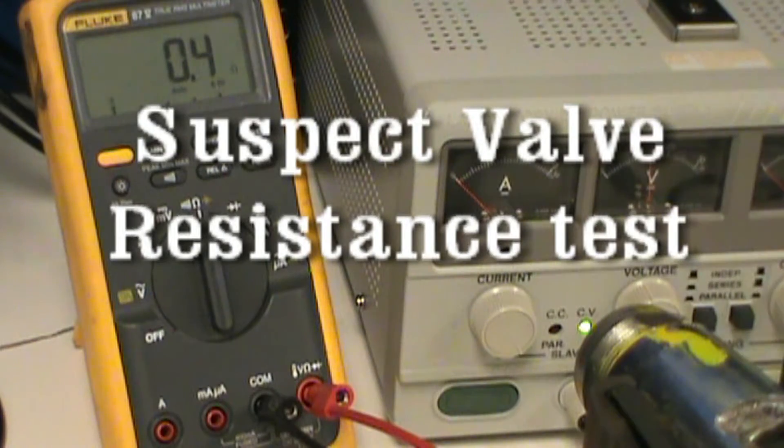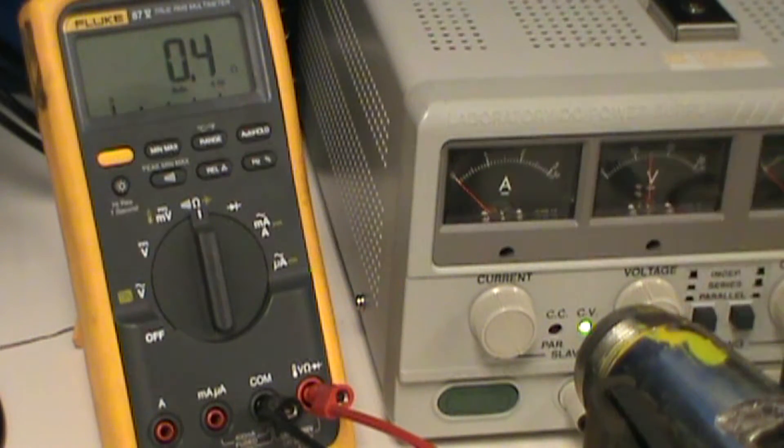Alright, now I've transferred my leads over to our suspect bad valve, and as you can see we already have a couple tenths of an ohm, and it's kind of dancing around a little bit, showing that this switch is closed, but not as well as the other one.